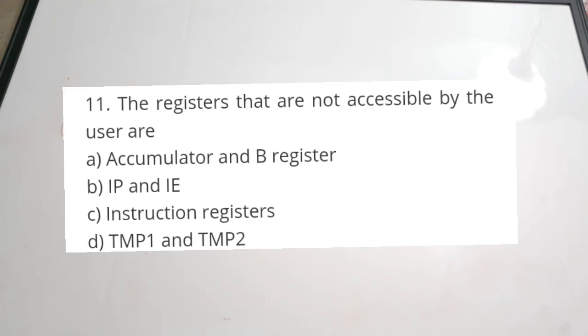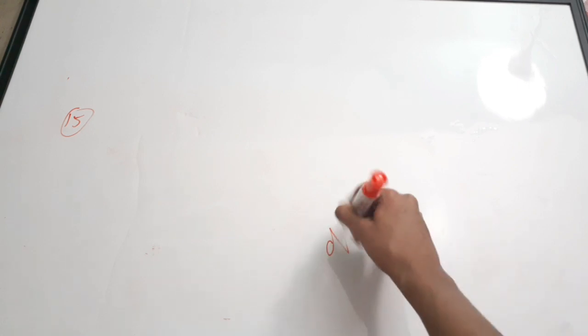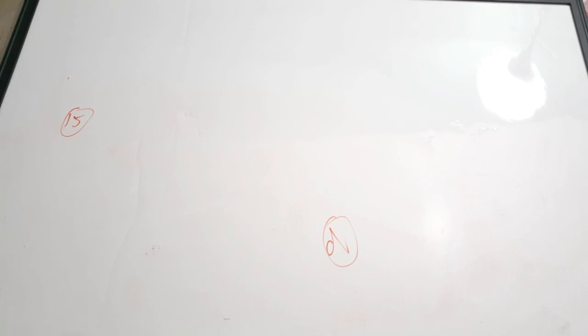Question number fifteen: the registers that are not accessible by the user are — A) accumulator and B register, B) IP and IE, C) instruction registers, D) TMP1 and TMP2. TMP1 and TMP2 are temporary registers used to hold operands during arithmetic operations, and users cannot access these temporary registers programmatically. The correct answer is D, TMP1 and TMP2.